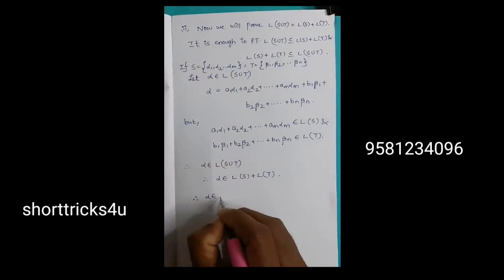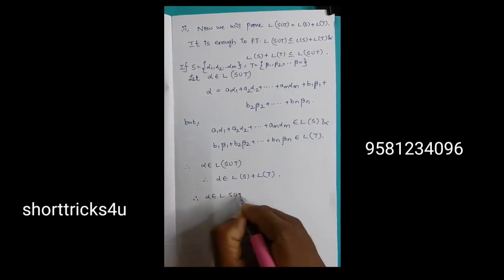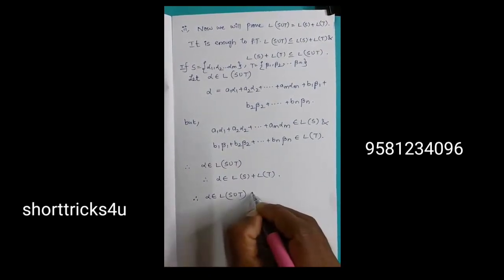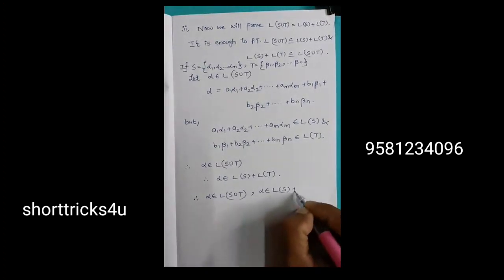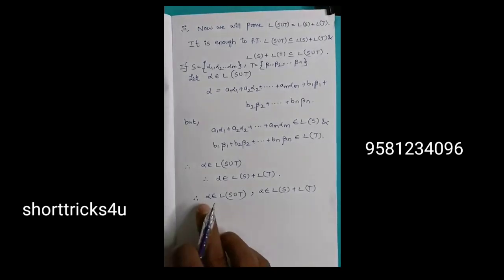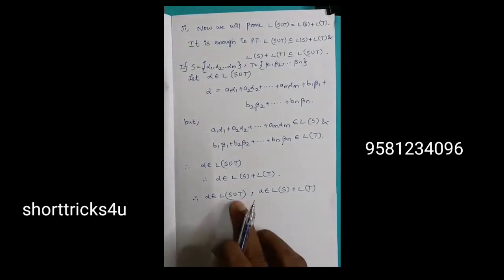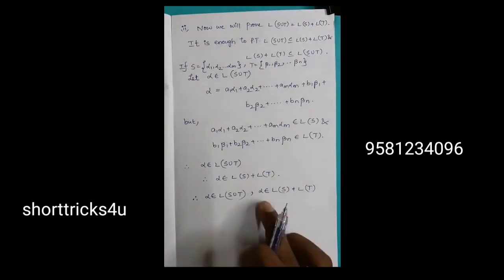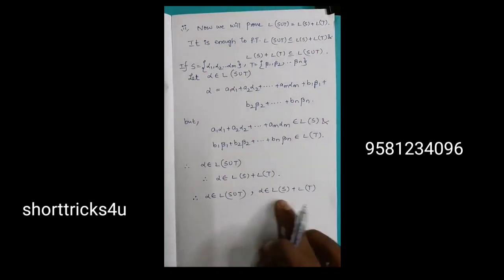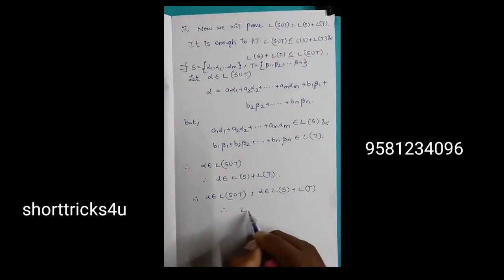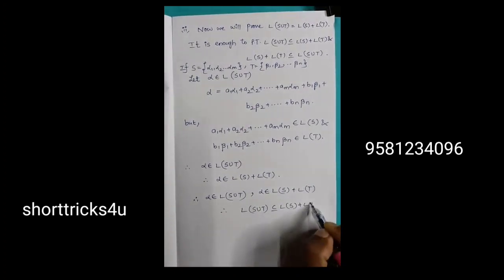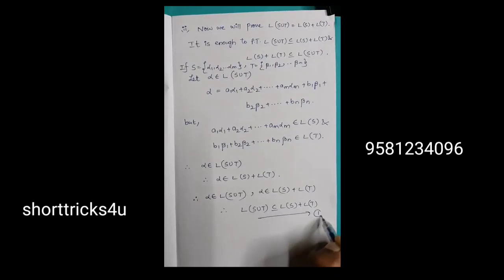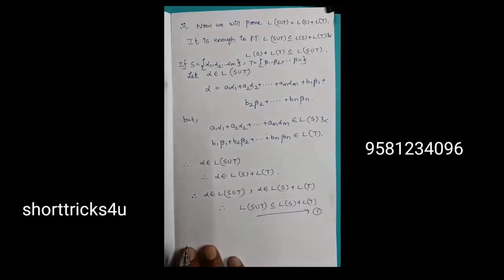Alpha belongs to L of S union T, and now we have alpha belongs to L of S plus L of T. This belongs to the same vector space, the same linear span.